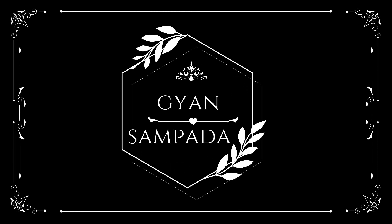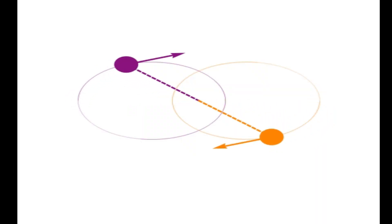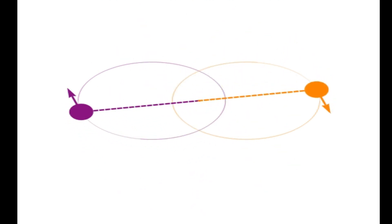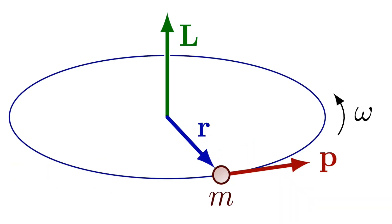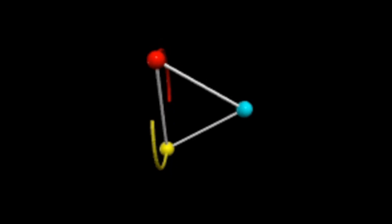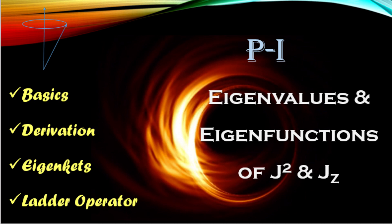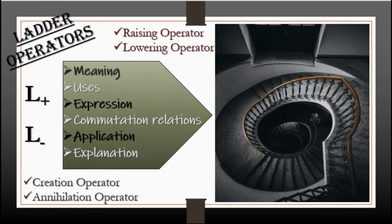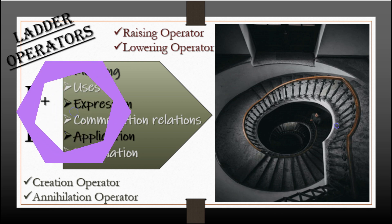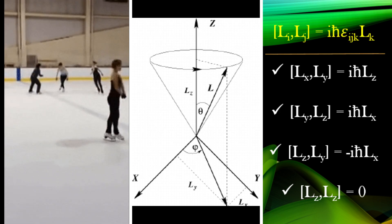Hello everyone and welcome back to my channel Gyan Sampada. In some of our previous classes we were dealing with quantum mechanical concepts relating to angular momentum, where we studied the eigenvalues and eigenfunctions of J² and Jz. In the previous two classes we went through the whole derivation using ladder operators. Today I have come up with a very short and sweet approach for the same — eigenvalues and eigenvectors of J² and Jz.